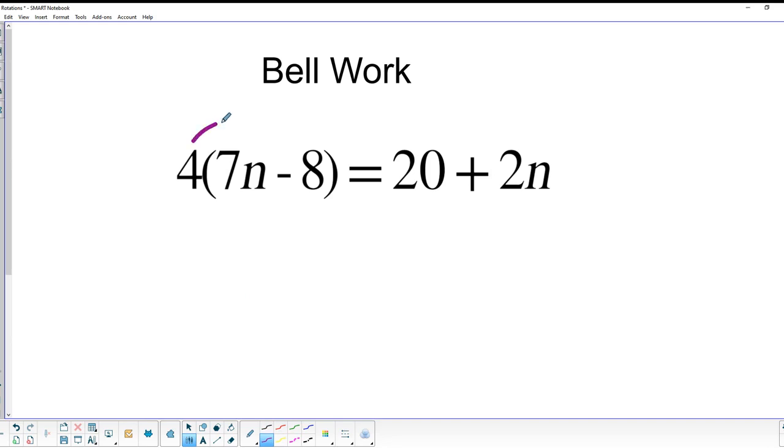We'd use the distributive property to get rid of the parentheses by multiplying 4 times that 7n and that 8. So that's a multiplication, and when we do that multiplication we get 28n minus 4 times 8 which is 32, and all of that equals 20 plus 2n.